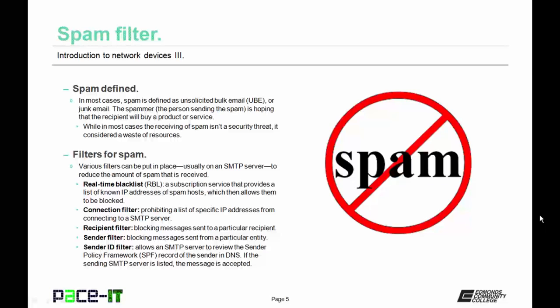There are also recipient filters — this is blocking messages sent to a particular recipient or end user. There are also sender filters — this is blocking messages sent from a particular entity. And finally, there is the sender ID filter. This allows an SMTP server to review the sender policy framework, or SPF record, of the sender in DNS. If the sending SMTP server is listed, the message is accepted and it's not counted as spam.